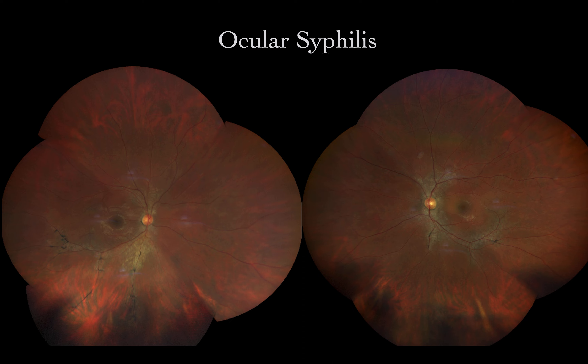Keep syphilis in your differential for any type of intraocular or extraocular inflammation or optic nerve changes in your ophthalmology practice. Make sure you order a non-treponemal and treponemal test — the non-treponemal RPR and VDRL, and the treponemal FTA among others. They usually have a 'T' in the name. Thank you and see you in the next video.